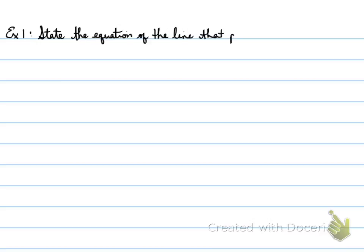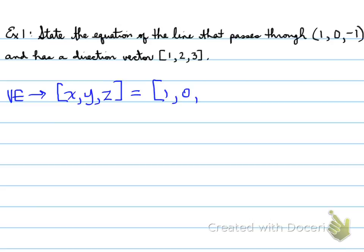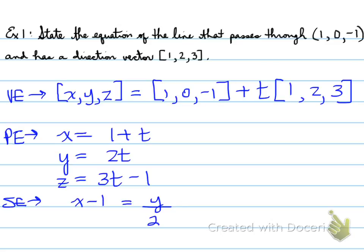Example 1: you're asked to state the equation of the line that passes through a given point and has a given direction vector. The vector equation of the line would be (x, y, z) = (1, 0, 1) + t(1, 2, 3). The parametric equation would be x = 1 + t, y = 2t, and z = 3t − 1. The symmetric equation would be (x − 1)/1 = y/2 = (z + 1)/3. These are the three different forms the equation of the line could be asked for.